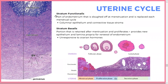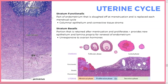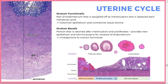The uterine cycle is driven by what's happening in the ovaries. The endometrium, myometrium, and perimetrium are layers of the uterus. The endometrium is the most important and can be divided into the stratum functionalis and stratum basalis. The functional layer is replaced every cycle — it's made of columnar epithelium and connective tissue stroma. The basal layer is always there, kept after menstruation, and is unresponsive to ovarian hormones. There are three phases: menstrual, proliferative, and secretory.